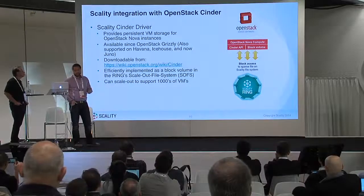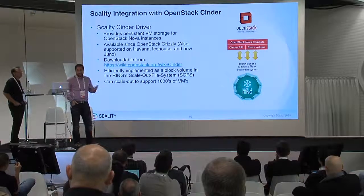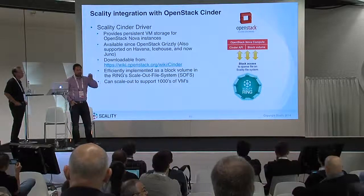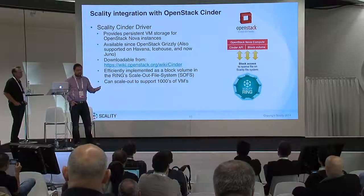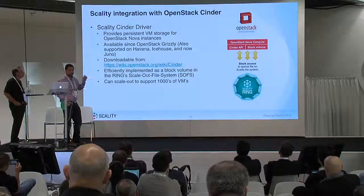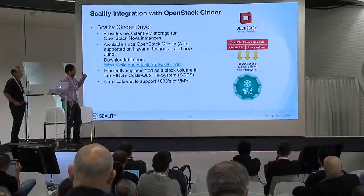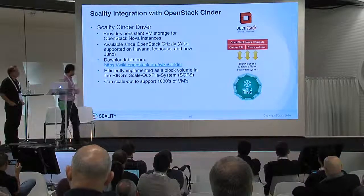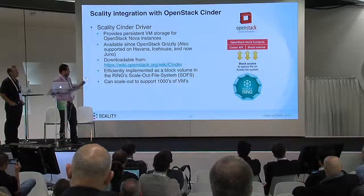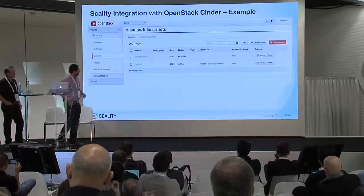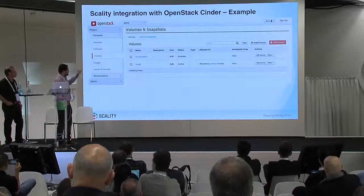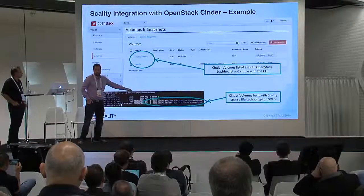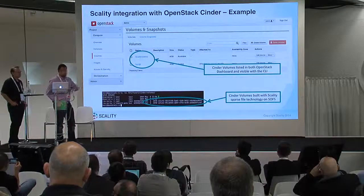Cinder is for compute — for VM storage. As Paul said, we are not trying to be the fastest VM backend. What we're trying to do is be capacity-optimized. If you deploy us for the object side, you can point your slow, large VMs to us without having to deploy any extra hardware. We are a Cinder backend, and that backend creates and operates on files in our system. The files can be of any size and they look like a VM to the outside. That's an example of a volume inside of Horizon with Scality as a backend — the files appear in the Scality file system, and we take care of distributing the load in the backend.